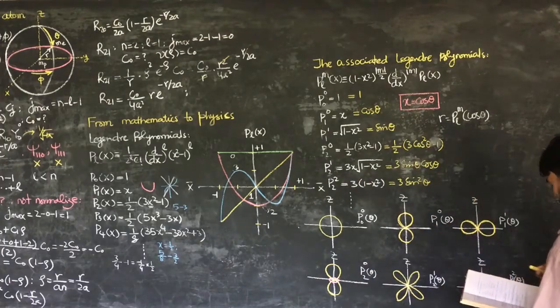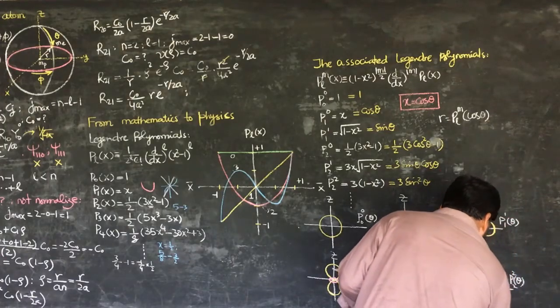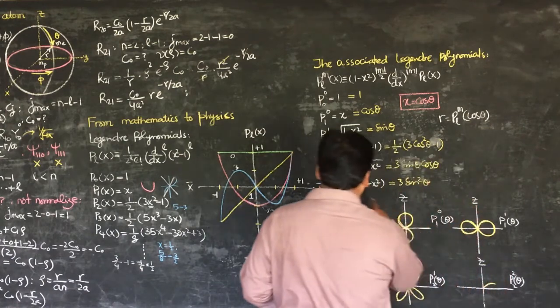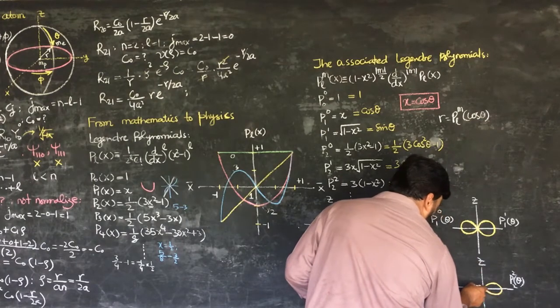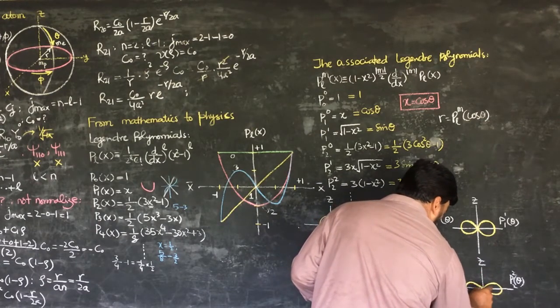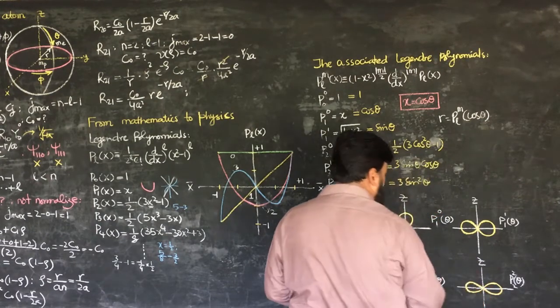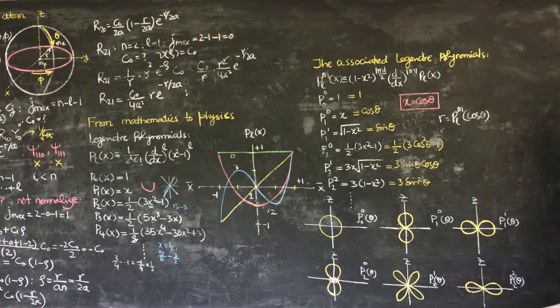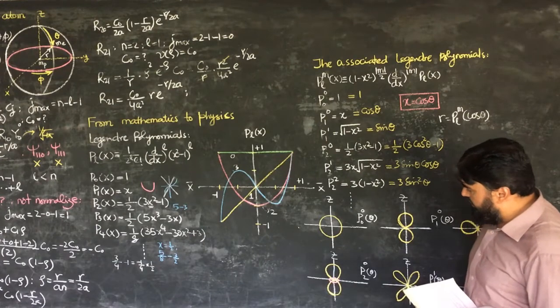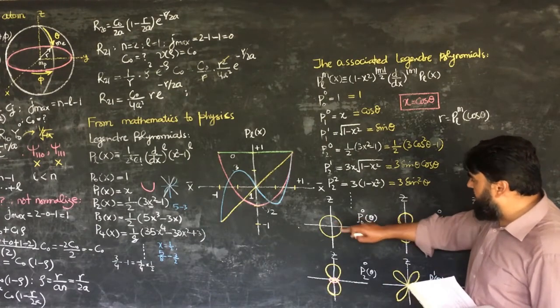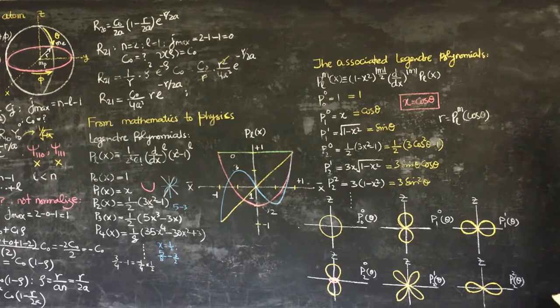While P2 of 2 is 3 sine square theta, so it is something like this. And now from here we are having some idea as we have seen the atomic orbitals and somehow these shapes are like them.